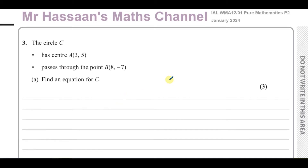Here we've got a question about circles. The circle C has center A(3,5) and passes through the point B(8,-7). Find an equation for C.